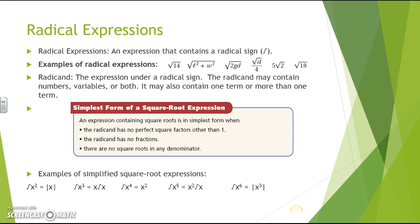Radical expressions are expressions that contain a radical sign — the square root sign. Here we have some examples of radical expressions: the square root of 14, the square root of L squared plus W squared, the square root of 2 times G times D, the square root of D over 4, 5 times the square root of 2, and the square root of 18. These are all examples of radical expressions.